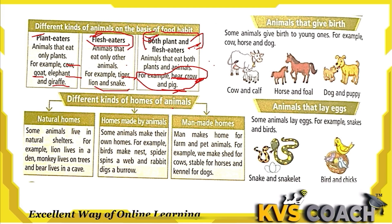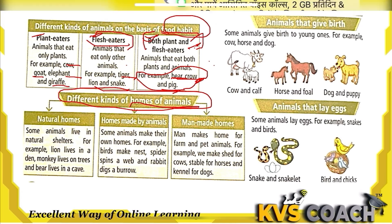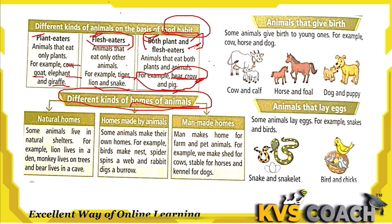Now let's discuss different kinds of homes of animals. On the basis of homes, there are three types: natural homes, homes made by animals, and homes made by man.